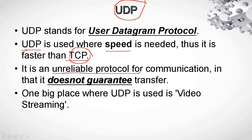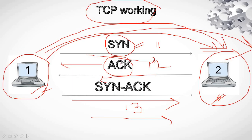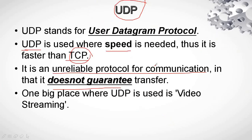UDP is an unreliable protocol for communication and it does not guarantee transfer. Unlike TCP — where you go through synchronization and acknowledgement to establish the connection — in case of UDP, nothing like that happens. It's like taking a stone and throwing it into the dark.